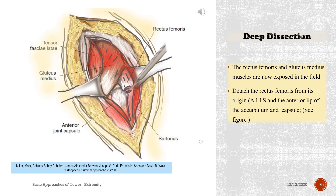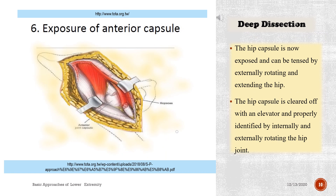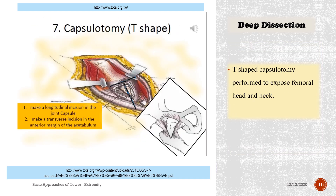Deep dissection: the rectus femoris and gluteus medius muscles are now exposed. Detach the rectus femoris from its origin at the ASIS and the anterior lip of the acetabulum and capsule. The hip capsule is now exposed and can be tensed by externally rotating and extending the hip. The capsule is cleared with an elevator and identified by internally and externally rotating the hip joint. A T-shaped capsulotomy is then performed to expose the femoral head and neck.